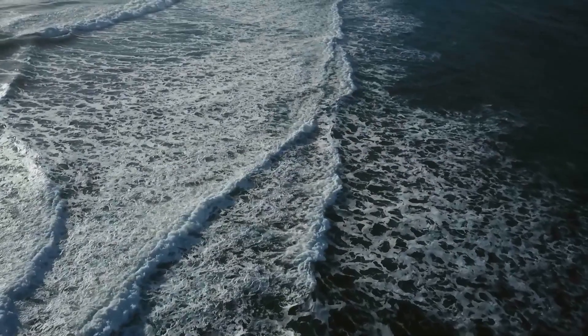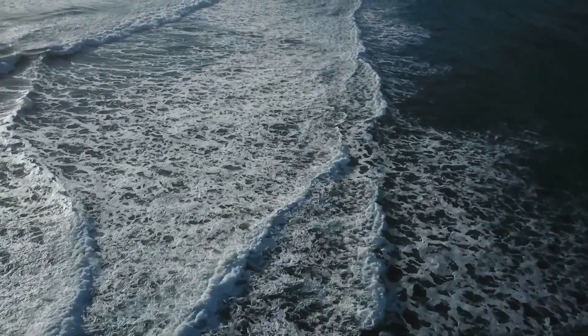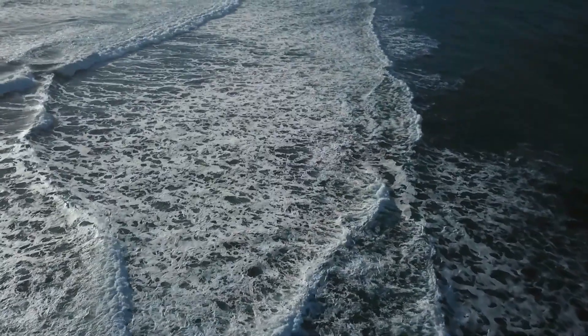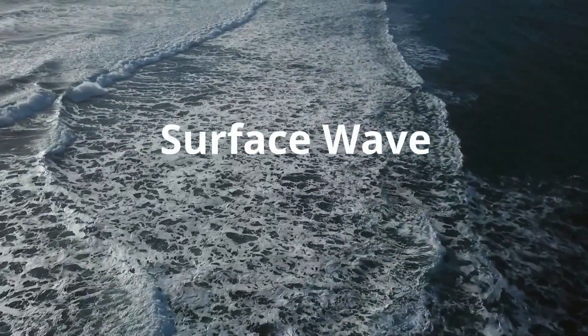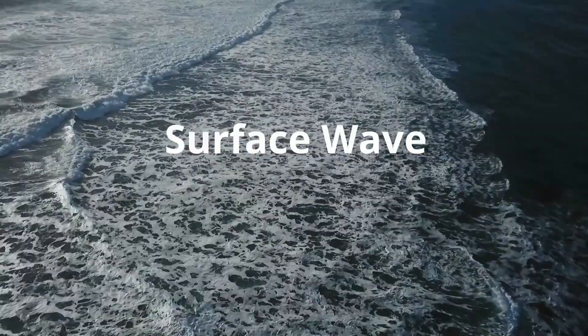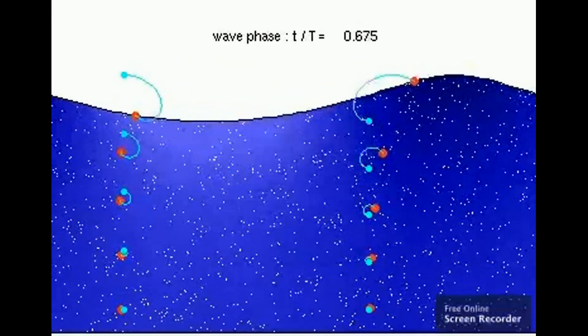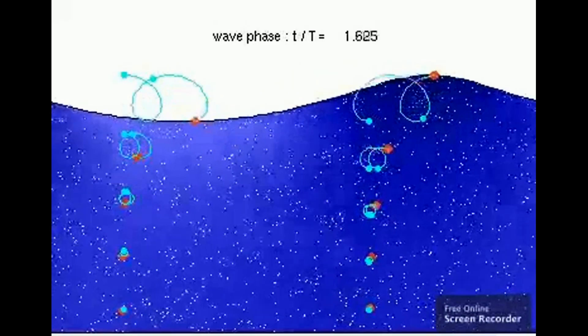While the waves that travel within the depths of the ocean are longitudinal waves, the waves that travel along the surface of the ocean are referred to as surface waves. A surface wave is a wave in which the particles of the medium undergo a circular motion.